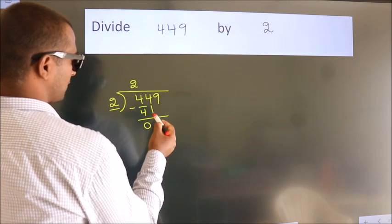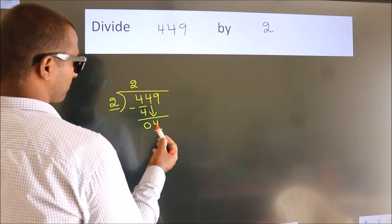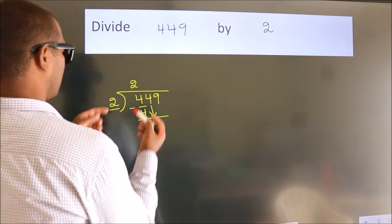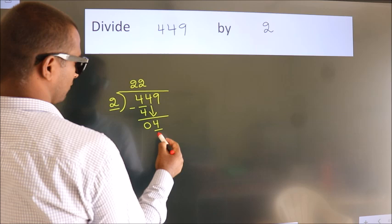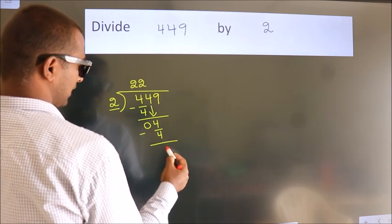After this, bring down the next number. So 4 down, so 4. When do we get 4 in the 2 table? 2 twos are 4. Now we subtract. We get 0.